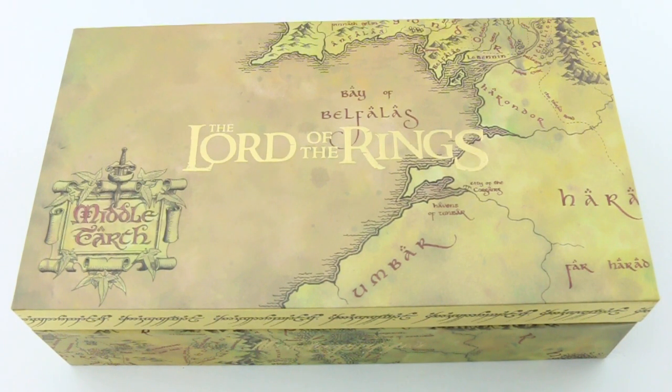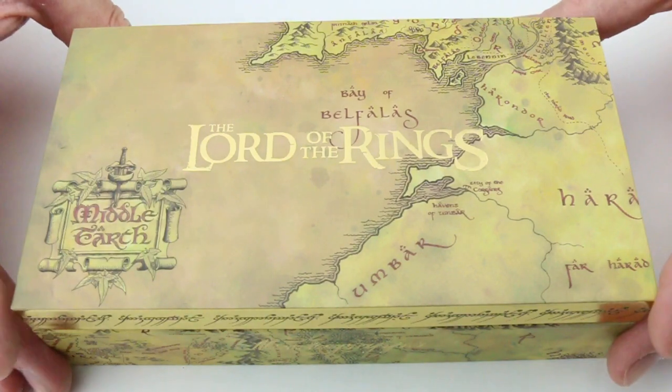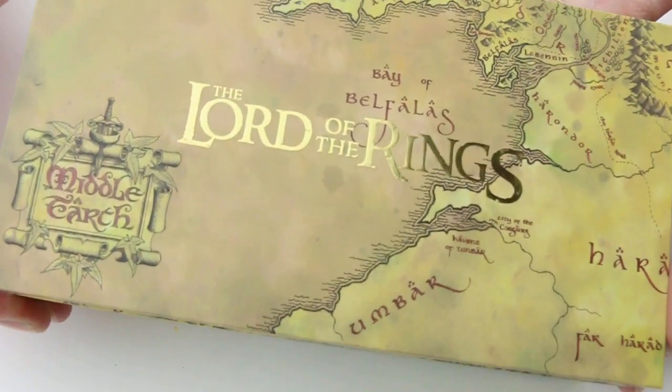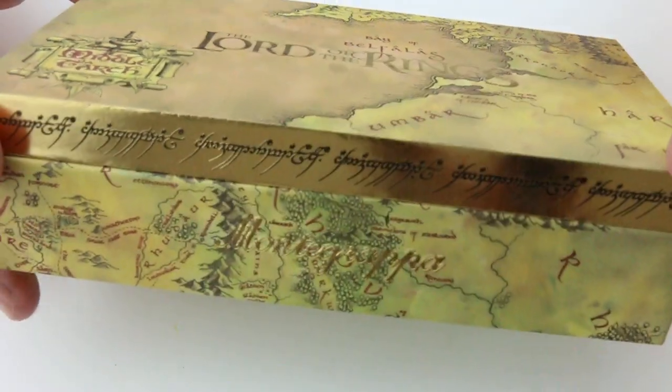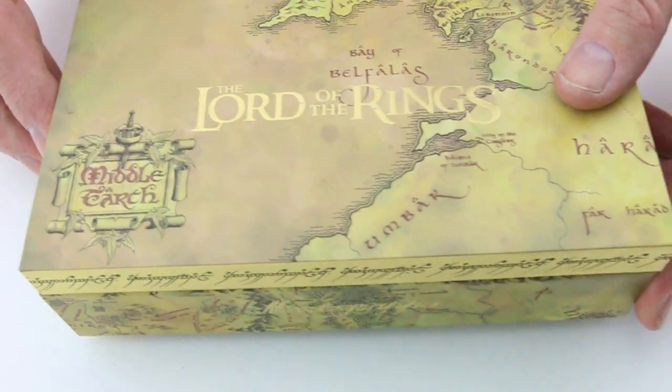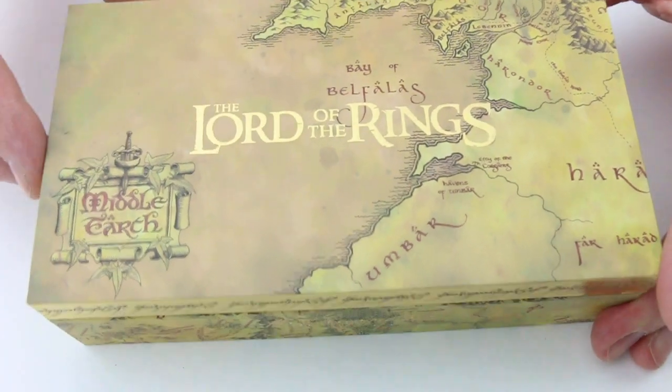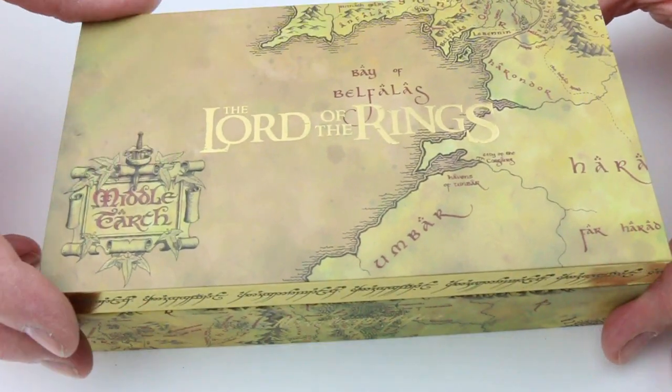This is the Monte Grappa Lord of the Rings Eye of Sauron Fountain Pen. The pen comes with a decorative box. It has the Lord of the Rings map and the engraving that you'd see on the ring.